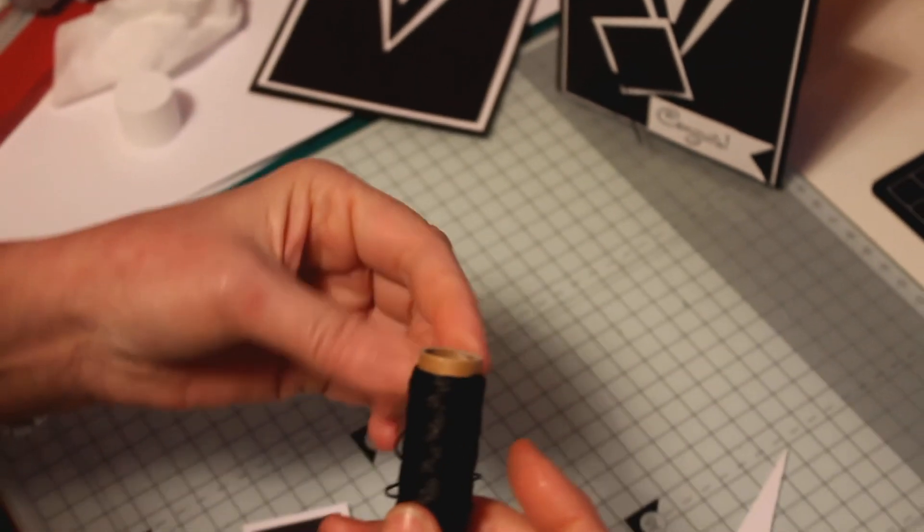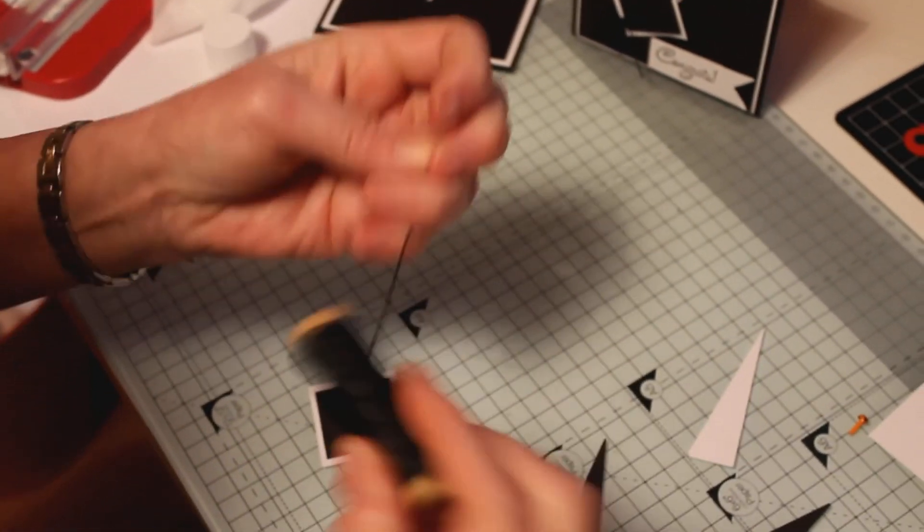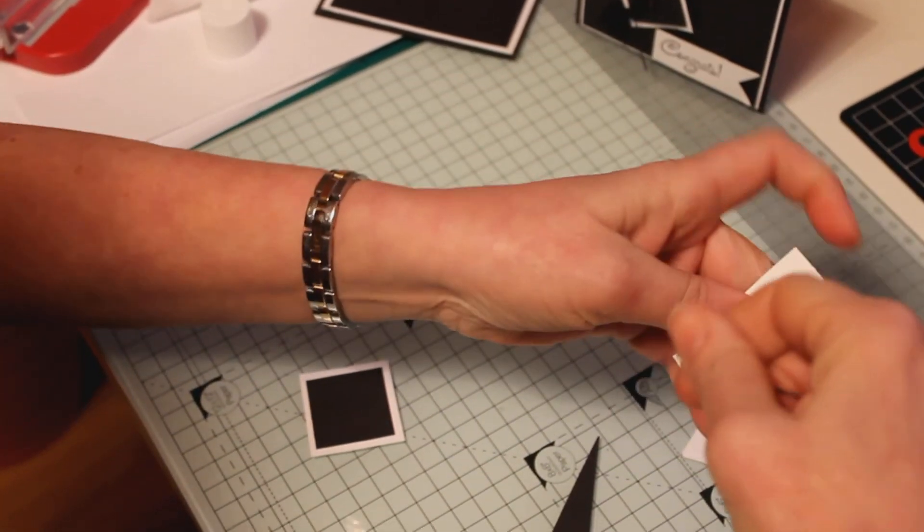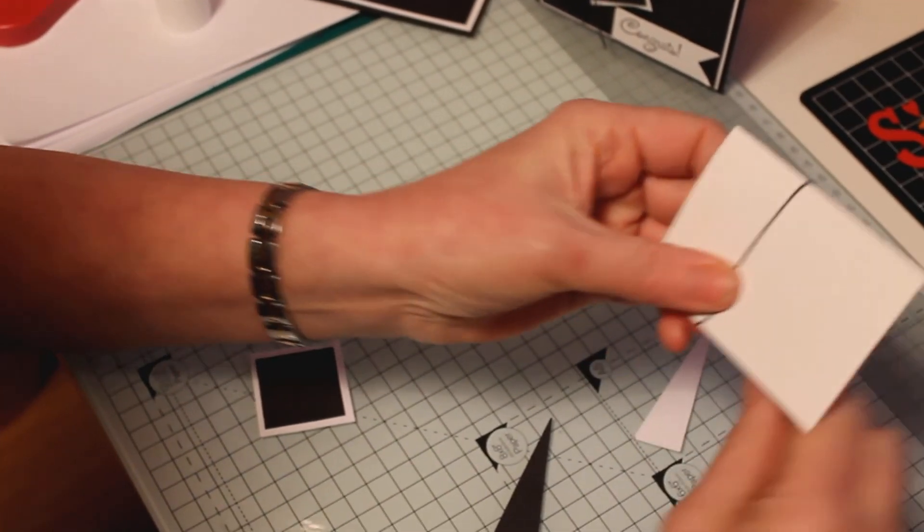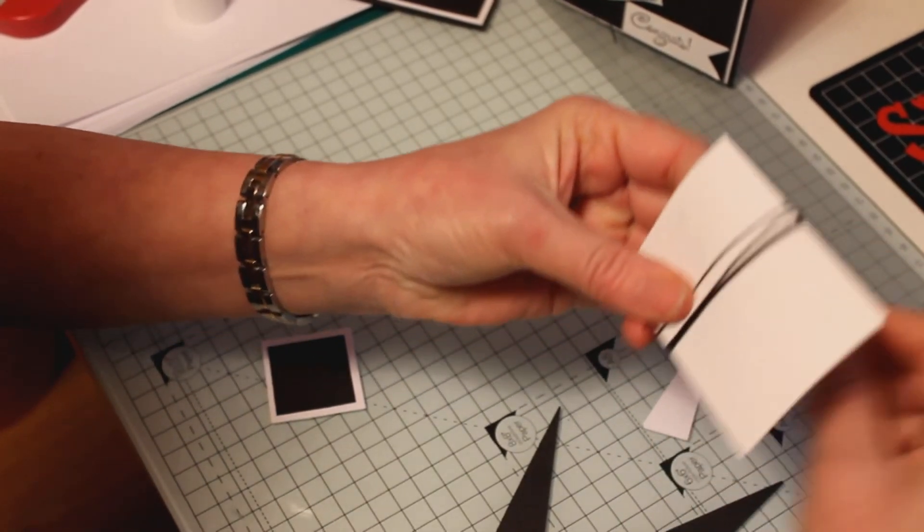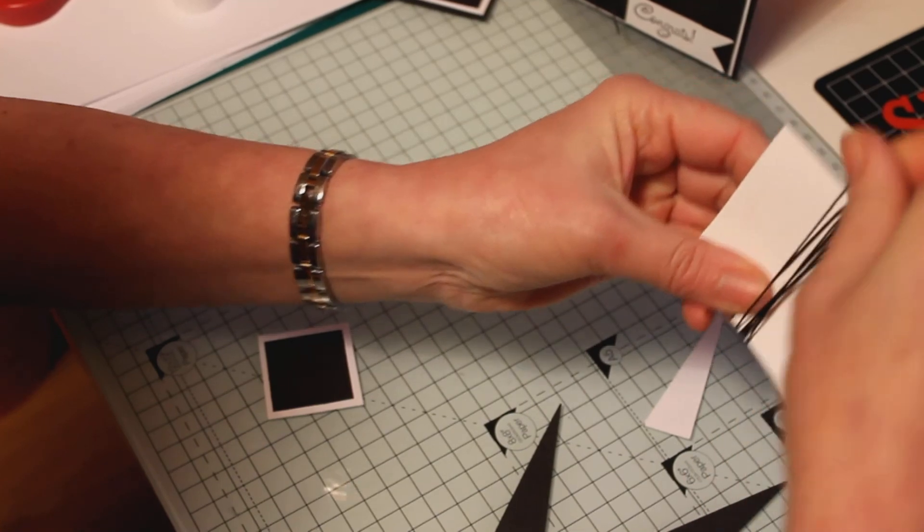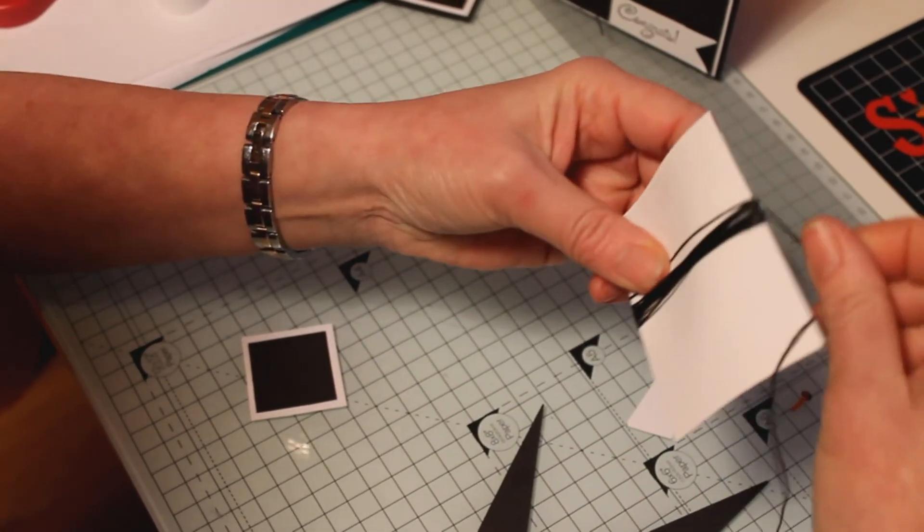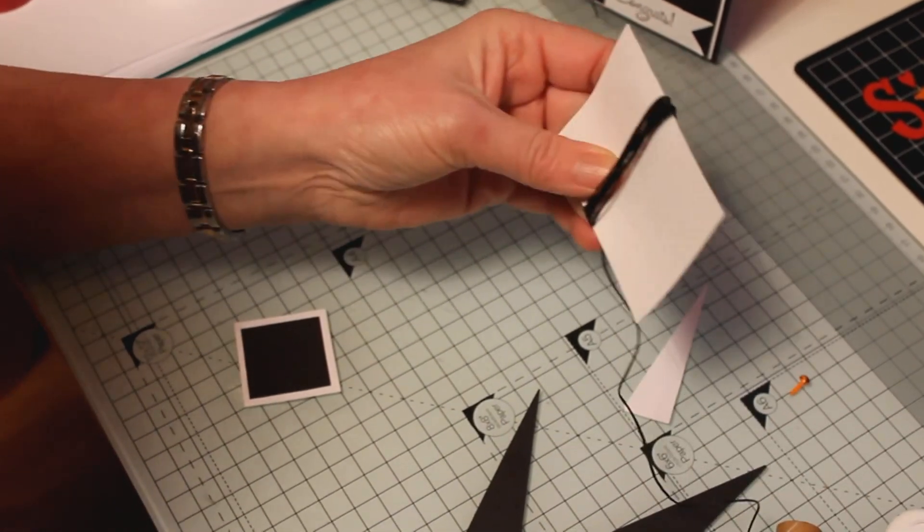I'm just taking a baker string here and if you get a little bit of card, you simply make the tassel by winding it around the card a few times. Depending on how thick you want your tassel you just go round and round until you think you have enough and I think that's plenty.